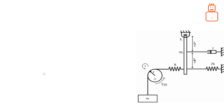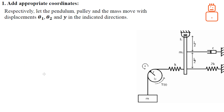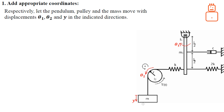Let's define the coordinates. Respectively, let the pendulum, the pulley, and the mass move with coordinates theta1, theta2, and y. The pendulum moves clockwise with theta1, the pulley spins anti-clockwise with theta2, and the mass m moves downward with y.